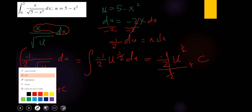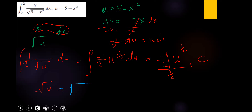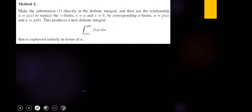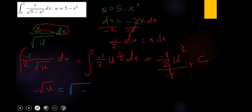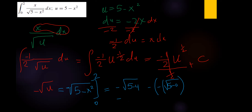For the definite integral, substitute back: negative square root of 5 minus x squared, evaluated from 0 to 2. At x equals 2: negative square root of 5 minus 4 equals negative 1. At x equals 0: negative square root of 5. So the answer is negative 1 minus negative square root of 5, which gives square root of 5 minus 1.